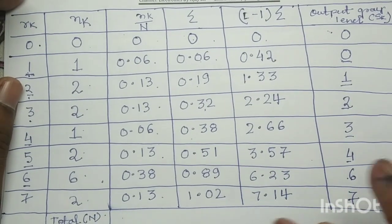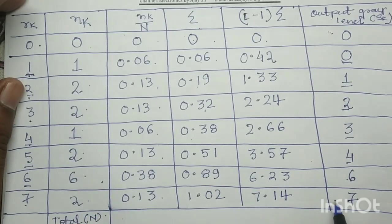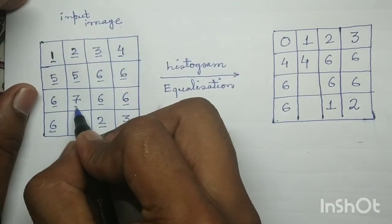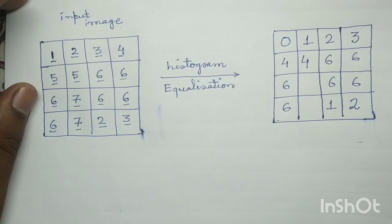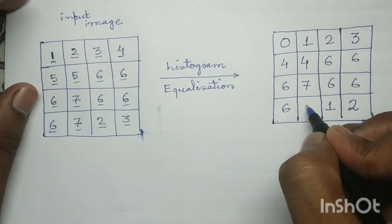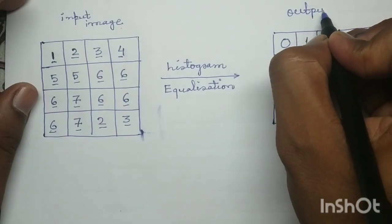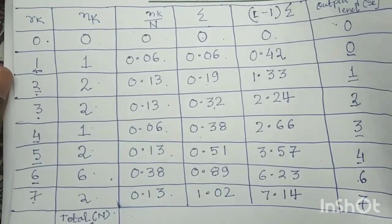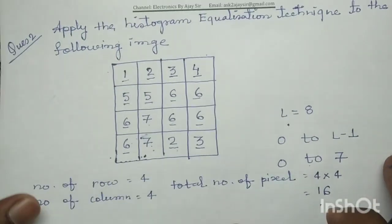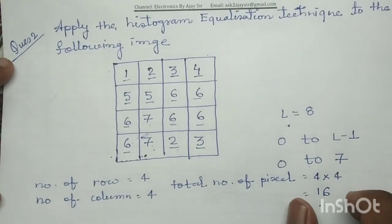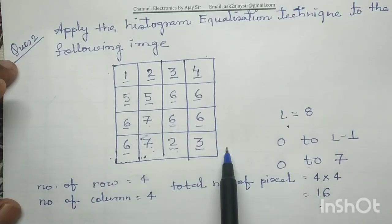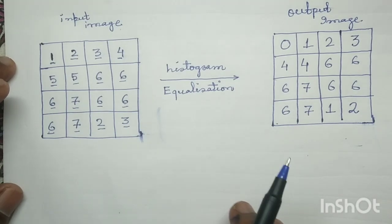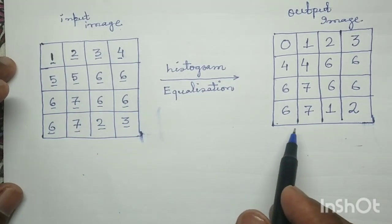Similarly for input gray level 7: in the output image it also maps to output gray level 7. Gray level 7 is repeated twice in the input image, so those two positions are written as 7 in the output image. In this manner, we have performed the histogram equalization for this input image, and this is the corresponding output image.